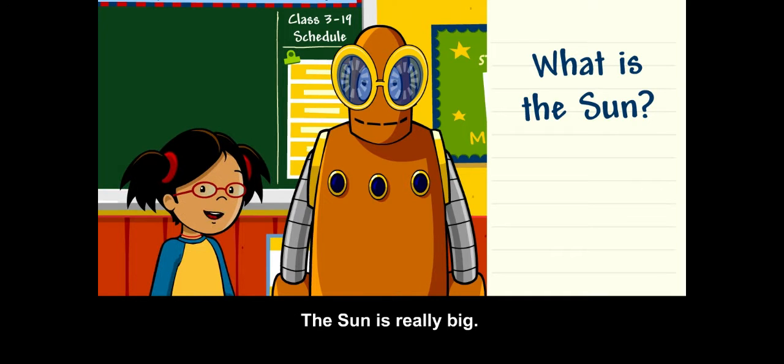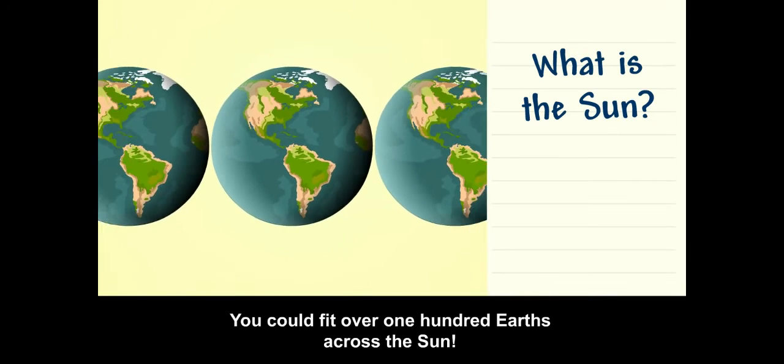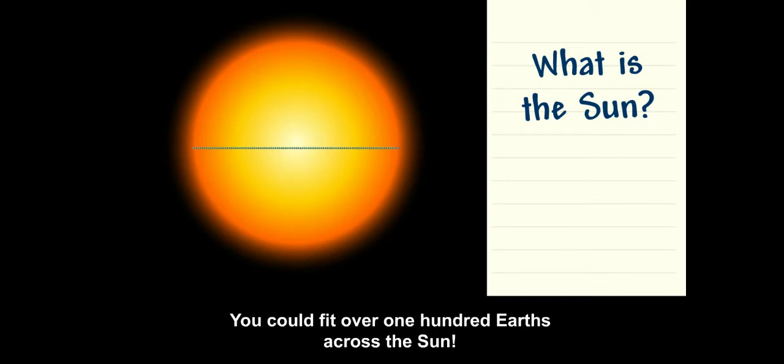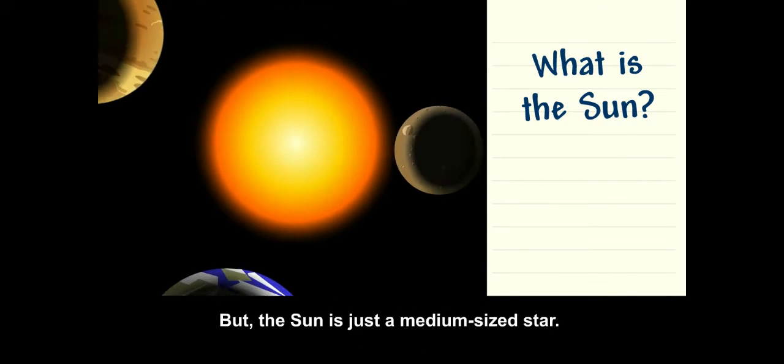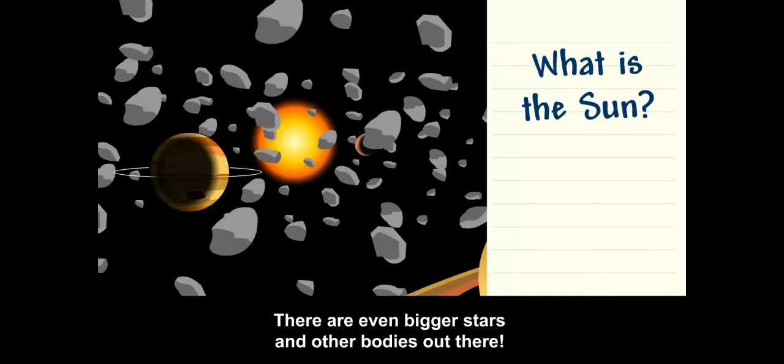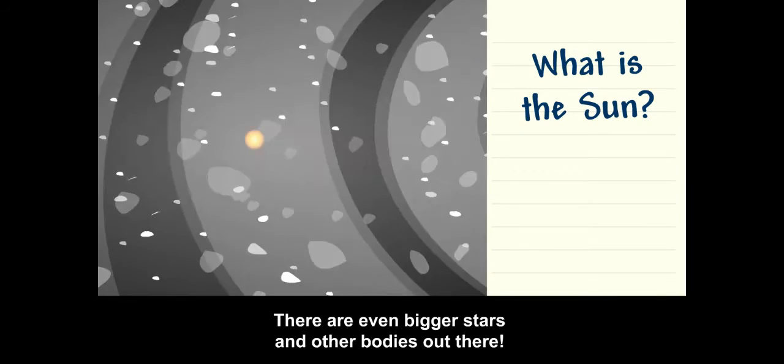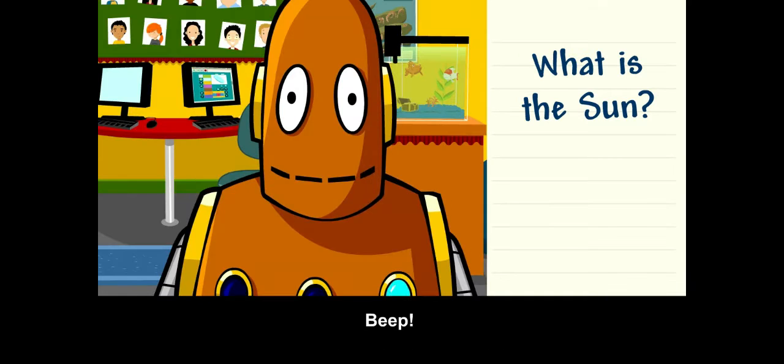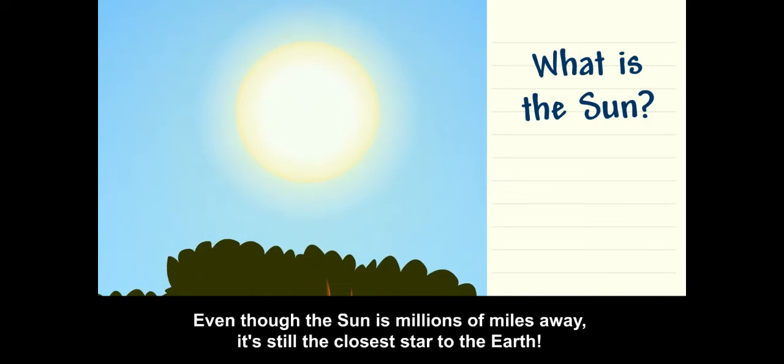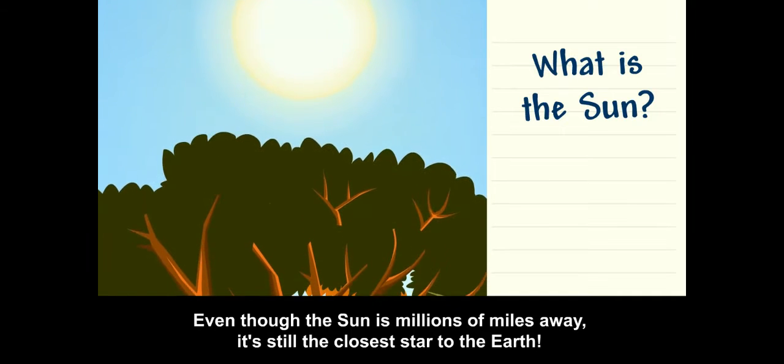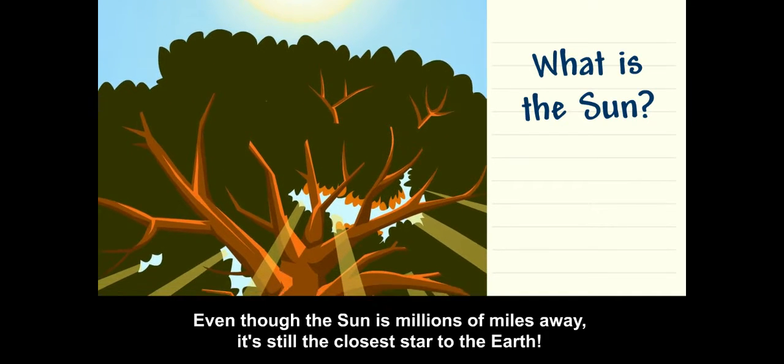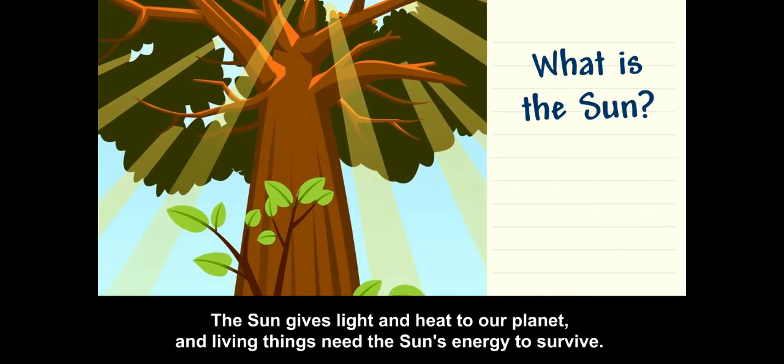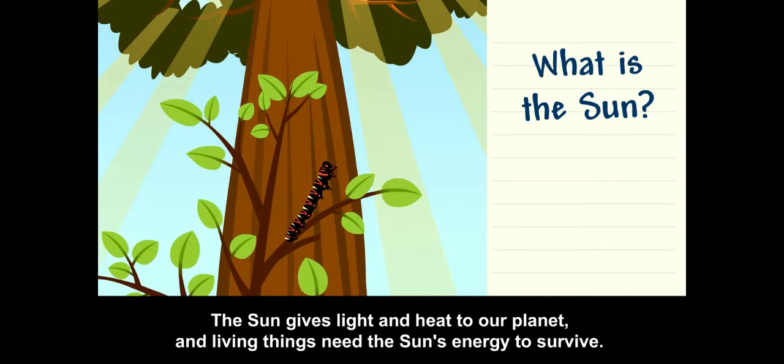The sun is really big. You could fit over 100 Earths across the sun. But the sun is just a medium-sized star. There are even bigger stars and other bodies out there. Even though the sun is millions of miles away, it's still the closest star to the Earth. The sun gives light and heat to our planet, and living things need the sun's energy to survive.